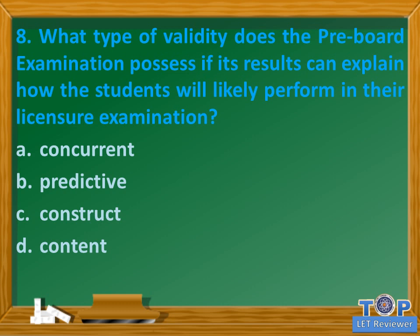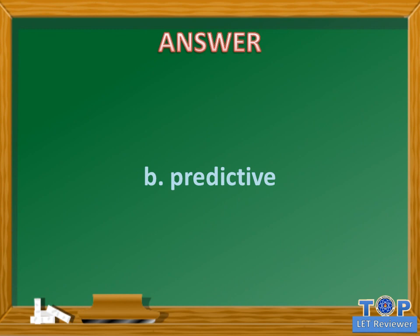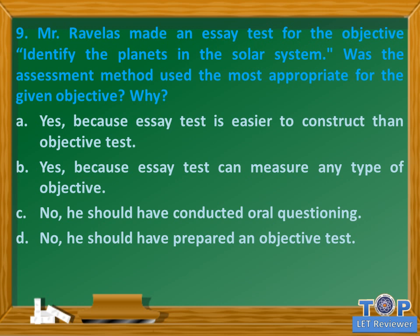Question number eight: What type of validity does the pre-board examination possess if its results can explain how the students will likely perform in their licensure examination? A. Concurrent, B. Predictive, C. Construct, D. Content. Answer: B. Predictive.